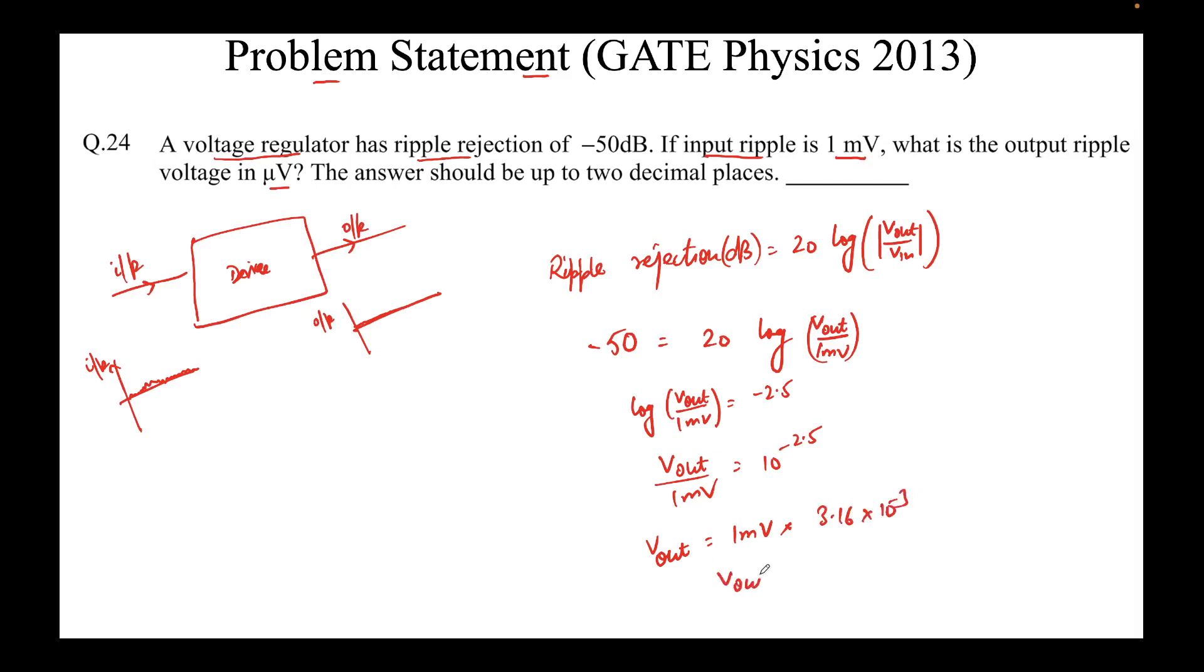So, v_out will come out to be 3.16. 1 millivolt times 10 to the power minus 3 is microvolts. So, 3.16 microvolts and we were required to find the voltage in microvolts. So, we have found the voltage in microvolts and we will put our answer as 3.16. It is already up to 2 decimal places. So, we need not change anything, no rounding off or anything.